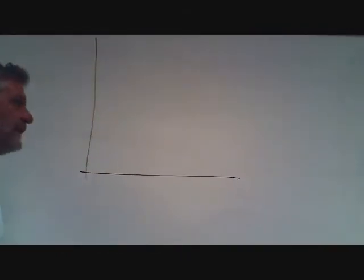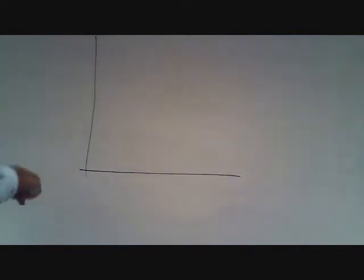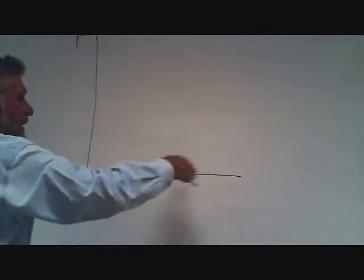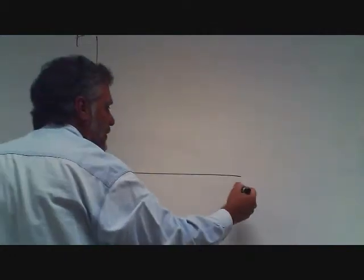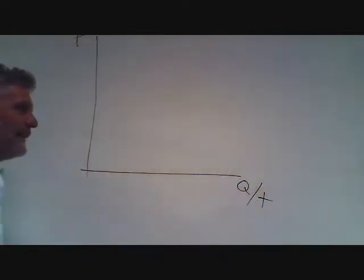To start with this, the first thing you want to do is draw the graph that shows the chocolate market. You start with the horizontal axis and the vertical axis. The vertical axis measures the price of the good. The horizontal axis measures quantity per period of time.